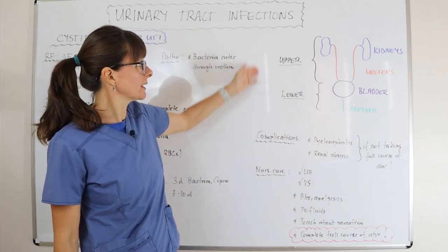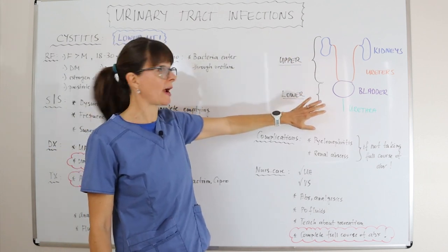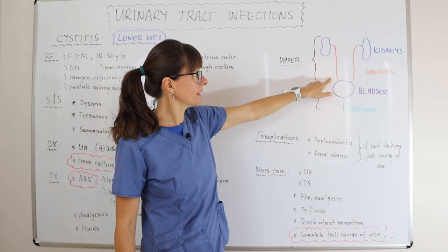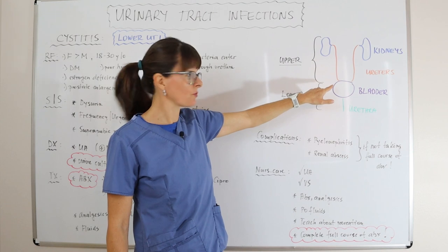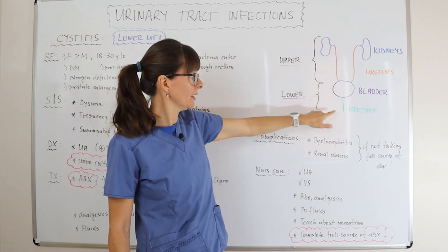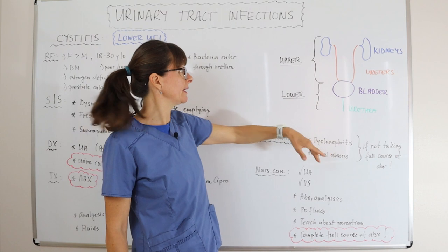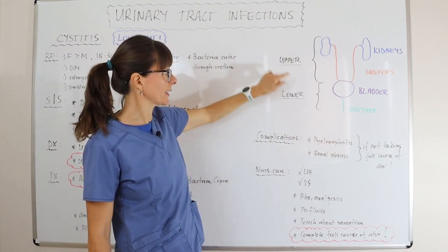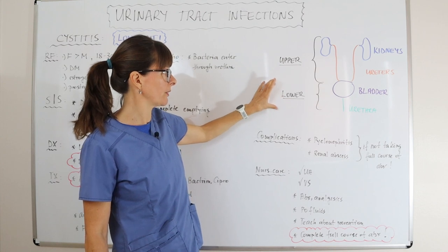If we review the anatomy here, this is all the urinary tract. It contains the kidneys, the ureters that drain the urine into the bladder, the bladder itself that serves as a reservoir for storing the urine, and then the urethra that helps us eliminate. The kidneys and ureters are considered the upper urinary tract, while the bladder and the urethra are the lower urinary tract.